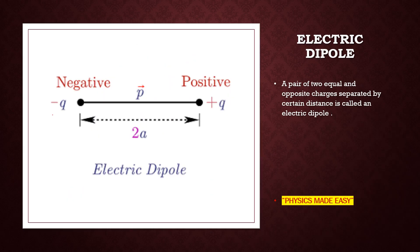Suppose we consider a pair of two equal and opposite charges separated by a certain distance. If that distance is 2A, then this complete setup is known as an electric dipole. So the next topic is electric dipole, in which a pair of two equal and opposite charges separated by a certain distance are taken. We take two charges minus Q and plus Q, separated by the small distance 2A.